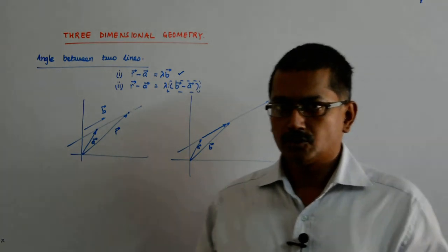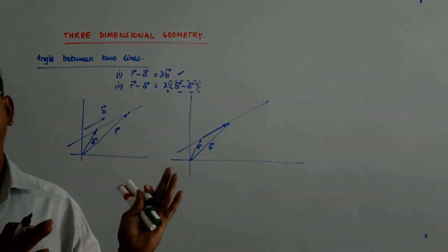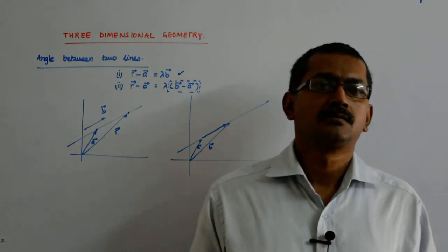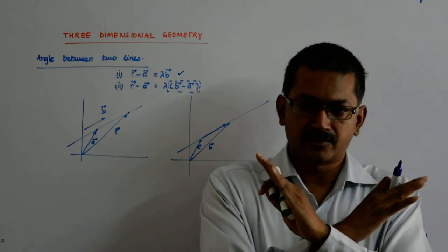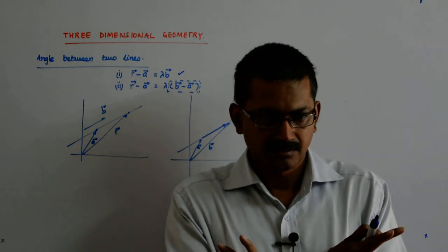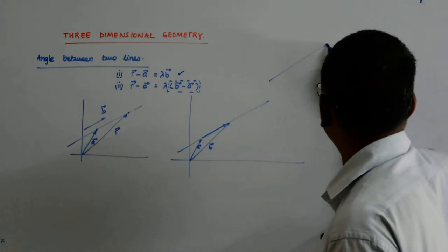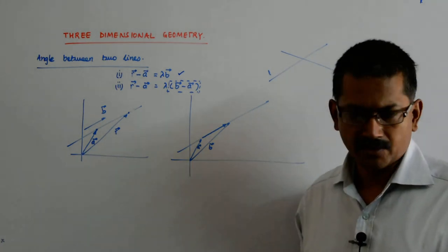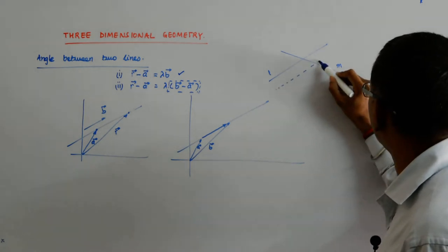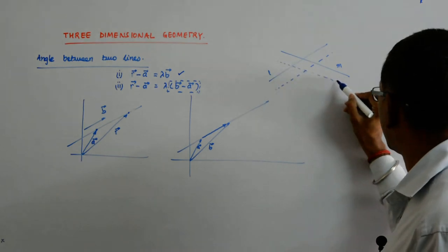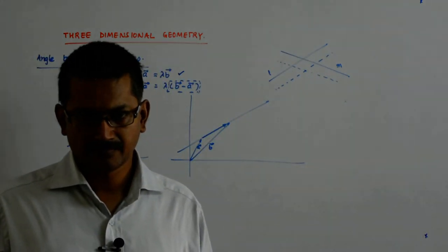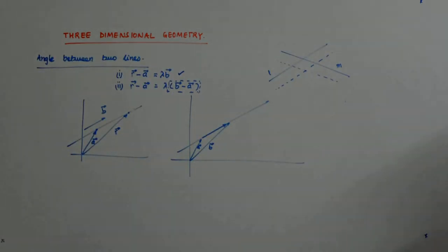So I know the vectors to which the lines are parallel. Whatever is the angle between those vectors will be the angle between the lines. If you have lines L and M and you want to find the angle between them — if I have a line parallel to L and another parallel to M, then the angle between these parallel vectors will be the same as the angle between the lines.